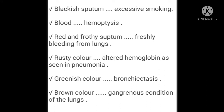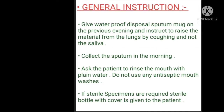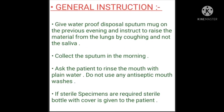Brown color sputum indicates a gangrenous condition of the lungs. If sputum is examined microscopically, a few white blood cells and epithelial cells may be seen. Eosinophils are found in conditions such as asthma. Red blood cells are found only when there is hemoptysis.